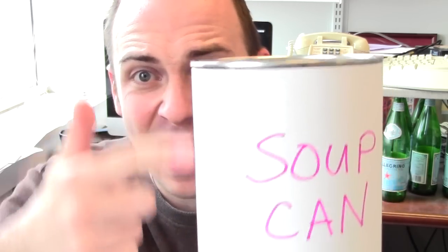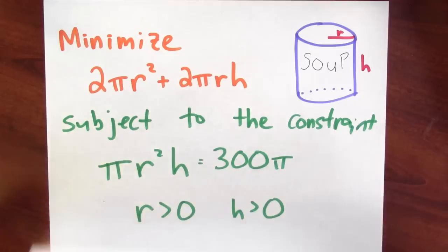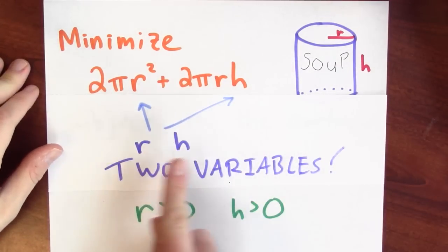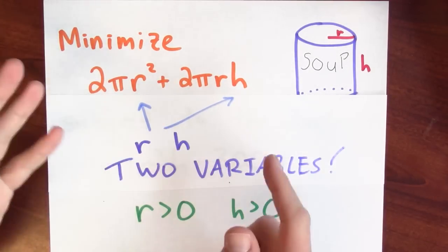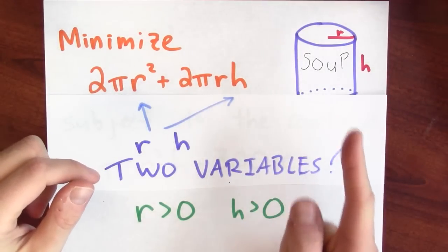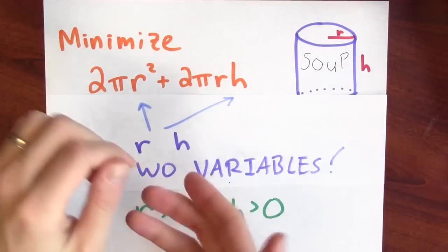This thing that I'm trying to optimize really involves two variables. Involves a height and also a radius. This is some bad news. The quantity that I'm trying to minimize involves two variables, r and h. And calculus, as we've been setting it up, only works for understanding how a single variable changing affects something else. So I need to rewrite this function of two variables as a function of a single variable.